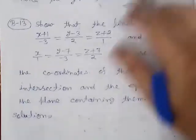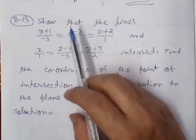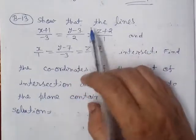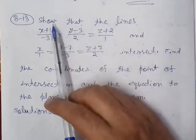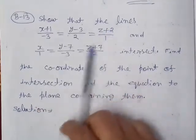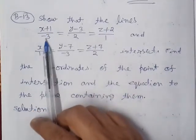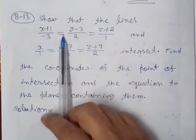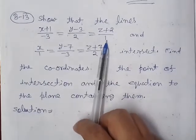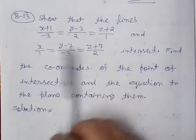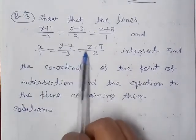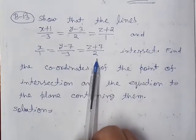Bismillah. This is a 3D (three-dimensional) analysis problem from the straight lines chapter. We have to show that the lines intersect. The first line is given as: (x+1)/(-3) = (y-3)/2 = (z+2)/1. The second line is given as: x/1 = (y-7)/(-3) = (z+7)/2.